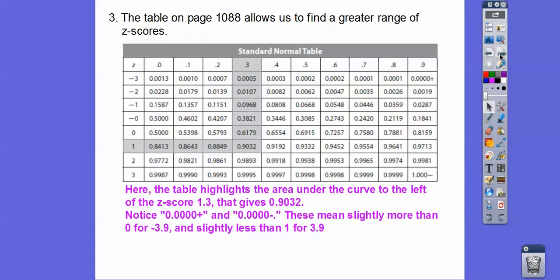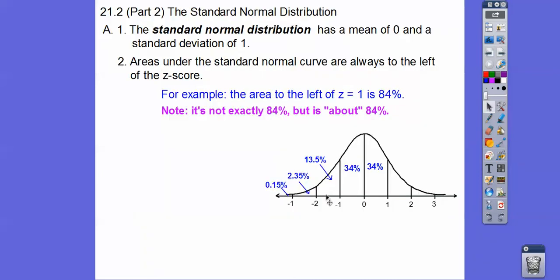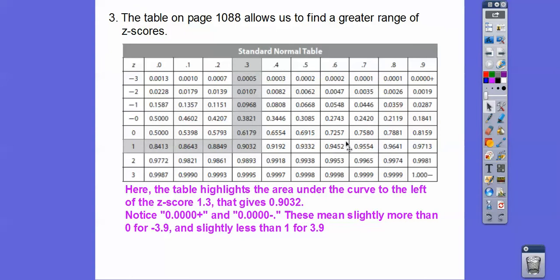All right, so this table we will be using, it's on our textbook on page 1088. It allows us to find a greater range of z-scores. So here, the table highlights the area under the curve to the left of the z-score 1.3. Be careful. This is negative 1.3. Notice how this is very small. Negative 1.3 would be like right about here and it would be to the left. 1.3 would be like right about here and to the left.